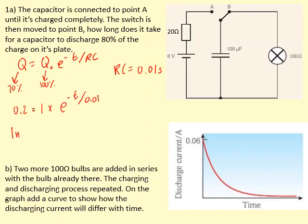So we can use this equation: 0.2 equals 1 times E to the power of minus T over 0.01. Rearranging this, we'll have ln(0.2) equals minus T over 0.01, which gives us a time of 0.016 seconds.